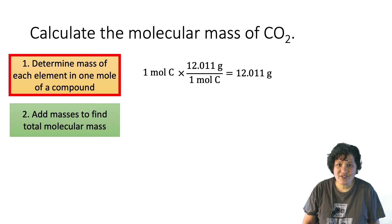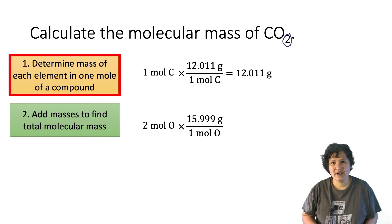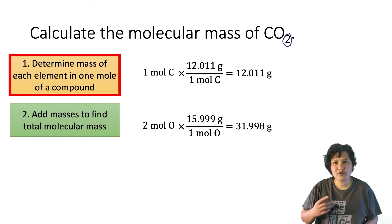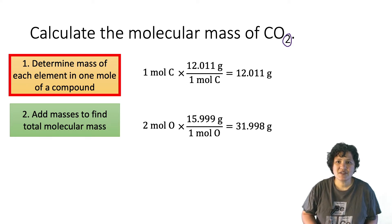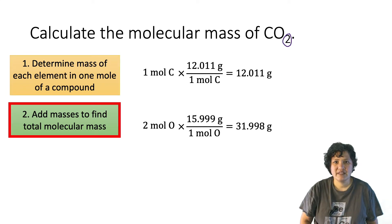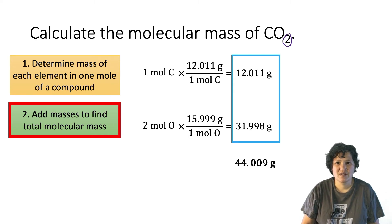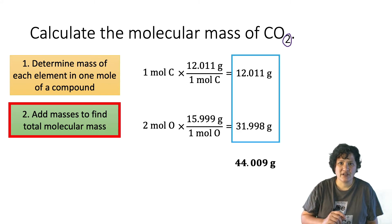The molecular formula tells us that there are two oxygen atoms per molecule of CO₂, so each mole of CO₂ will contain two moles of oxygen. Multiplying the molar mass of oxygen — 15.999 grams per mole — tells us that each mole of CO₂ will contain 31.998 grams of oxygen. Adding up the masses gives us a total of 44.009 grams, so the molecular mass of carbon dioxide is 44.009 grams per mole.